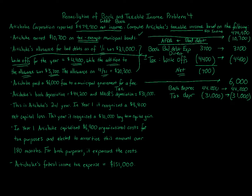Depreciation is an example of a timing difference. Over the life of an asset, you'll take the same total depreciation for both book and tax, but the timing differs. For example, a $60,000 asset depreciated over six years: straight line gives $10,000 per year for book, but MACRS uses double declining balance, giving more depreciation in early years. Eventually it evens out — that's the idea of a temporary difference.